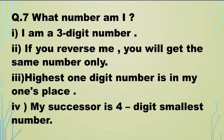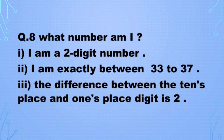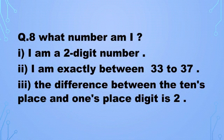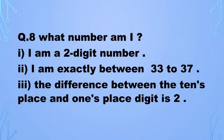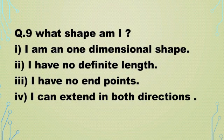Question number eight: What number am I? I am a two-digit number. I am exactly between 33 and 37. The difference between the tens place digit and the ones place digit is two. One more clue you will find in the PDF: you will find me in the five times table. Who am I?